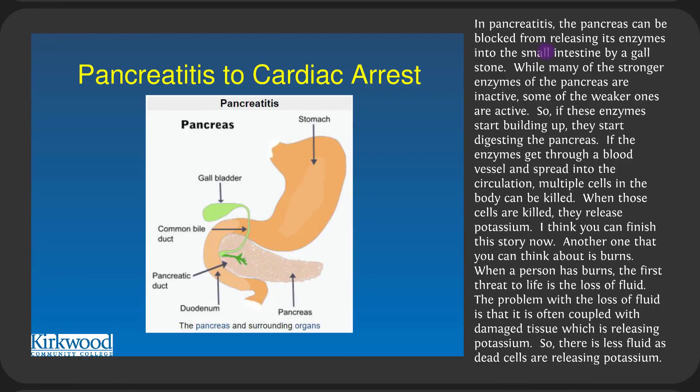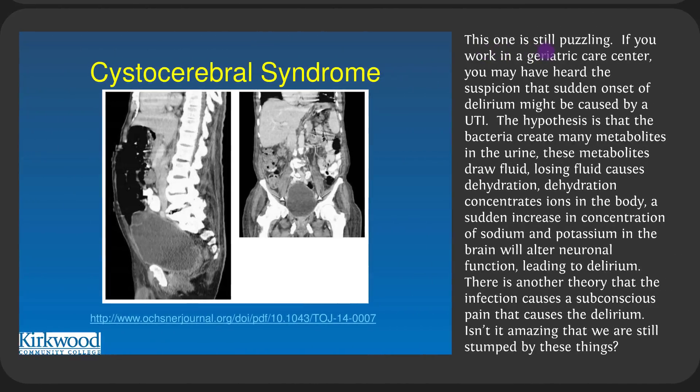In pancreatitis, the pancreas can be blocked from releasing enzymes into the small intestine by a gallstone. Some weaker enzymes are active and start digesting the pancreas. If enzymes spread into circulation, multiple cells are killed — releasing potassium and leading to hyperkalemia. With burns, the first threat to life is loss of fluid, but damaged tissue also releases potassium, so there's less fluid while potassium rises rapidly.